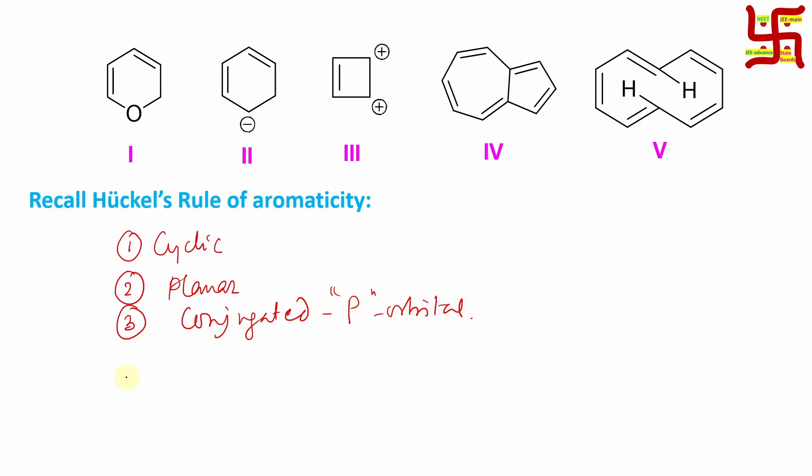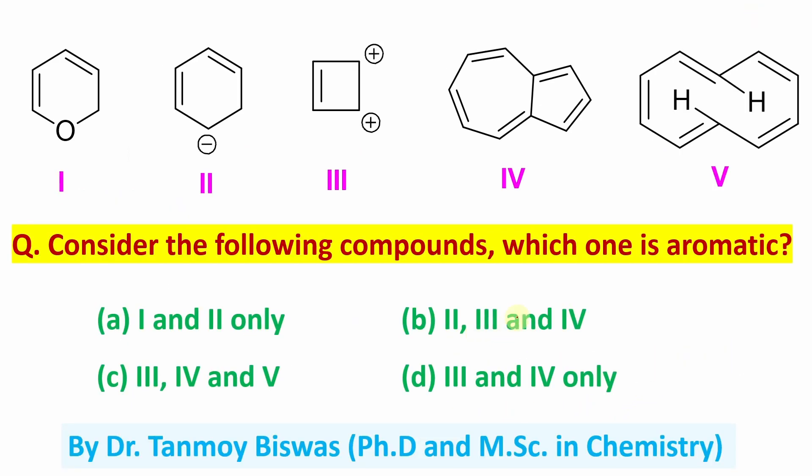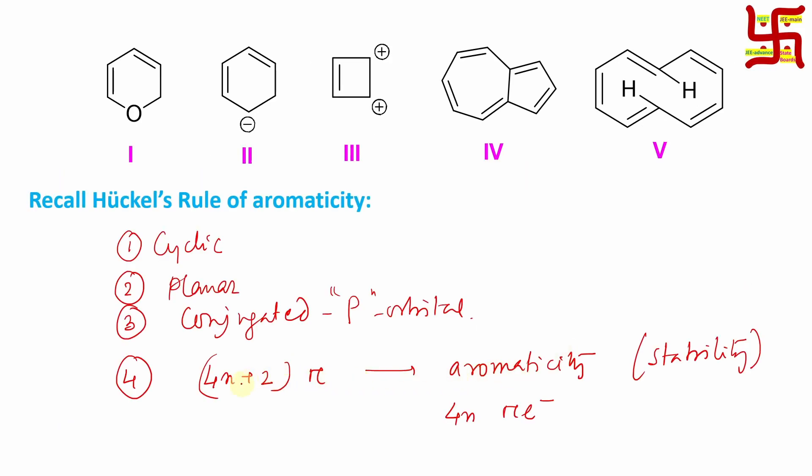Now fourth point is actually they have 4n plus 2 number of pi electrons for aromaticity. And by the way, remember aromaticity means stability. So if they have 4n plus 2 number of pi electrons they are aromatic so they are stable. Now if they have 4n pi electrons then they are actually very unstable, they are anti-aromatic. But our question is which one is aromatic, so we'll focus on this 4n plus 2 number of pi electrons. Obviously first three options will definitely be there.